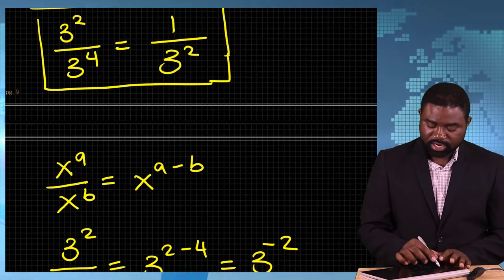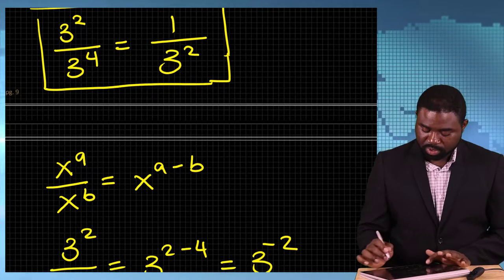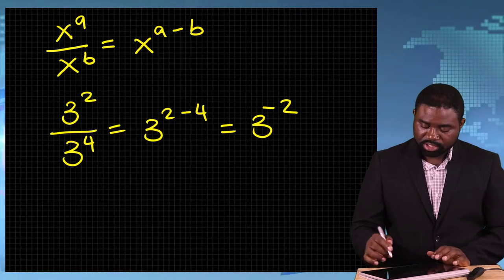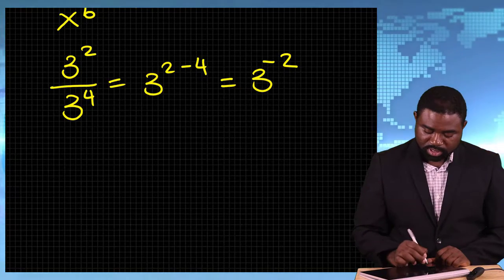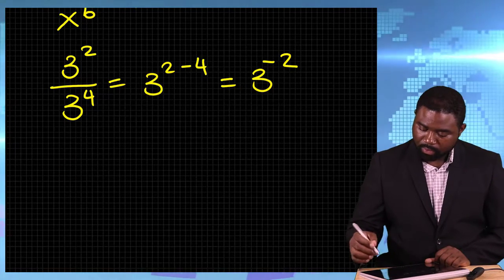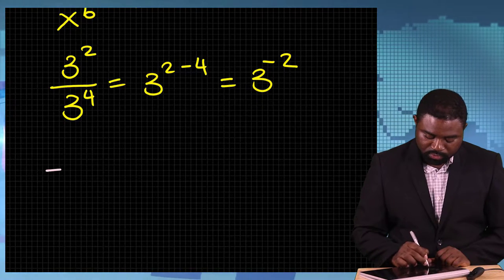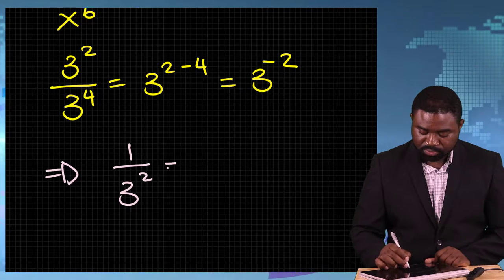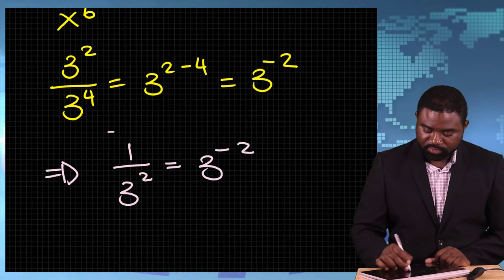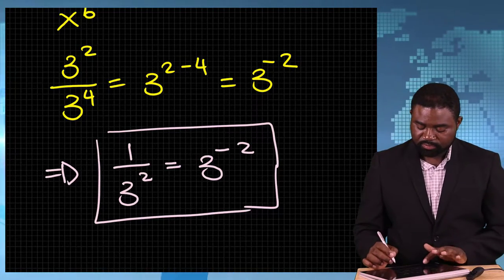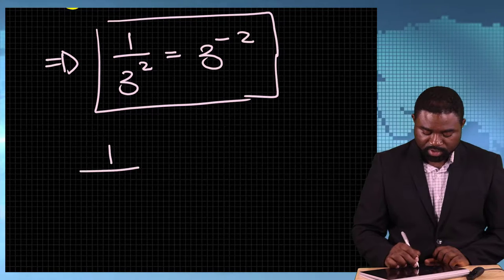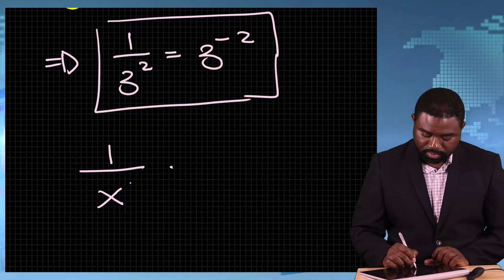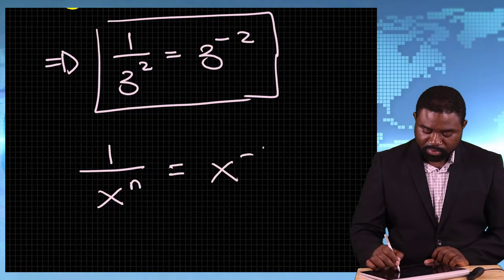You see here it's 1 divided by 3 raised to the power 2, and here it's 3 raised to the power negative 2. So it is logical for us to conclude that 1 divided by 3 raised to the power 2 is equal to 3 raised to the power negative 2. We call these negative powers. In other words, 1 over x raised to the power n will be equal to x raised to the power negative n.